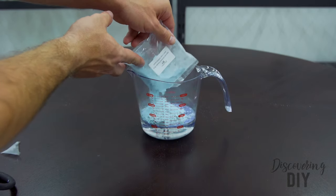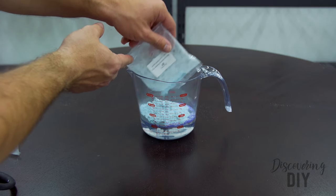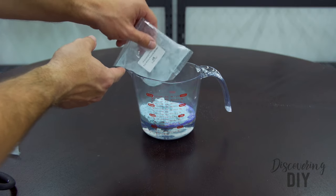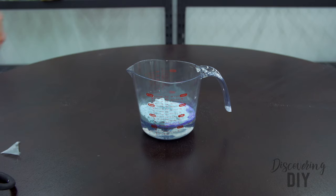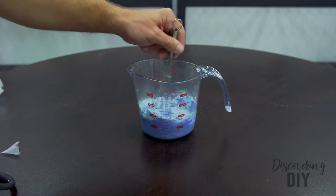First, pour one cup of water into a mixing cup or bowl, then add the 50 grams of Practice Molding Powder. And finally, using a whisk or a spoon, mix for three minutes.